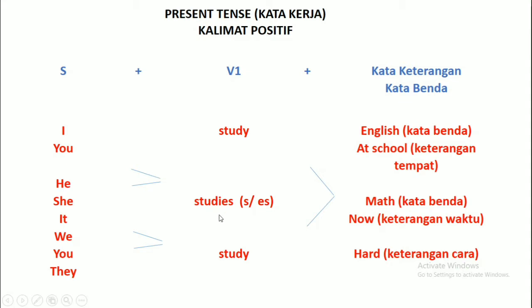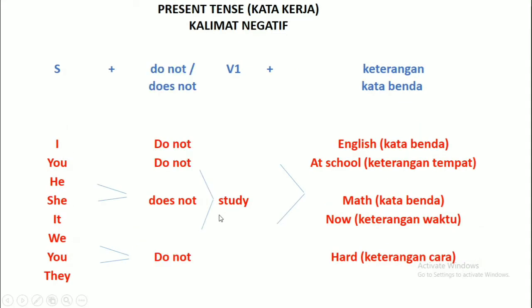Harap dipahami dulu teorinya ya. Kemudian untuk present tense kata kerja kalimat negatif: subject plus do not atau does not plus verb satu, kata kerja pertama, plus kata keterangan atau kata benda. Sepertinya ya, I do not study English. You do not study at school, misalnya ya. He does not study math.